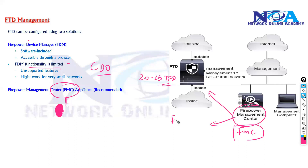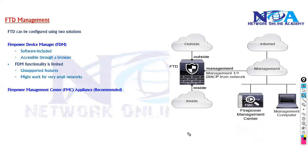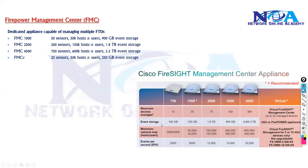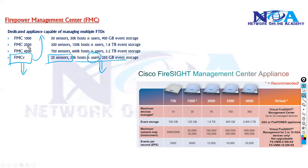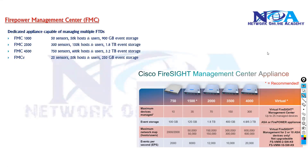FMC can be either virtual — downloaded as a virtual appliance and installed as software on your servers — or a dedicated physical appliance. Depending on the type of FMC you select, the number of devices you can manage will vary. With the virtual FMC, you can add up to 25 sensors, while physical appliances support higher numbers. There are three different versions of FMC, and scalability varies accordingly.